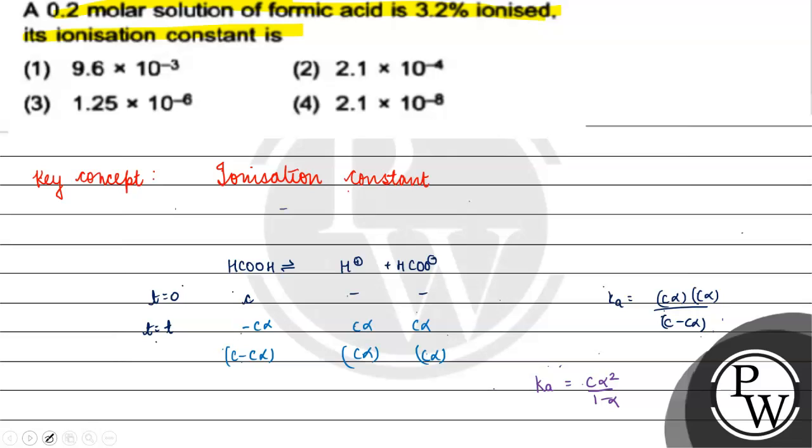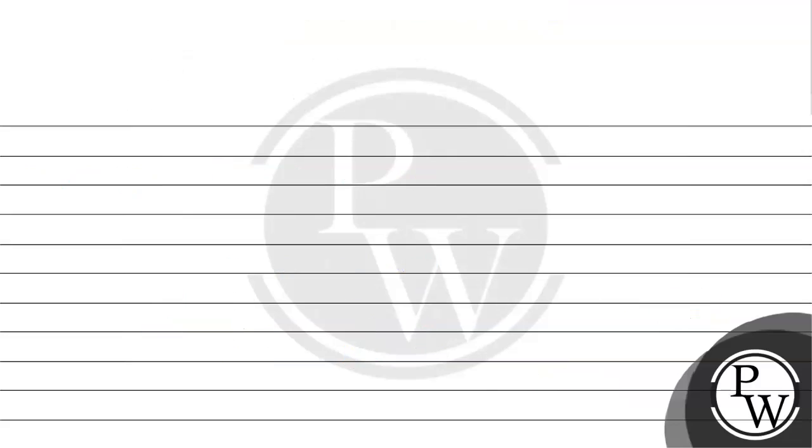3.2% ionized means 3.2 divided by 100, which is 0.032. So alpha equals 0.032.